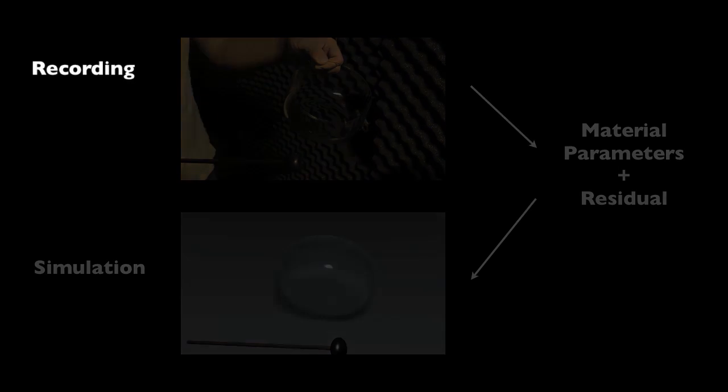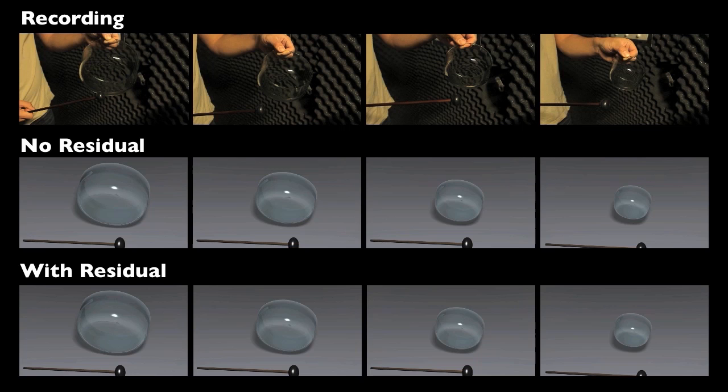We now show another example of transferred parameters and residual. From one recording, we estimate the material parameters and compute the residual. Then we transfer them to different shapes and compare with the real objects.